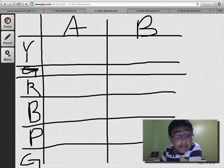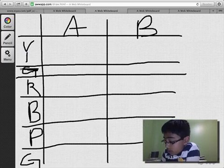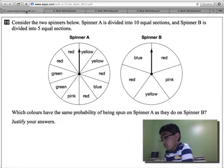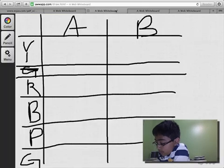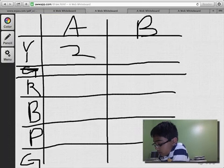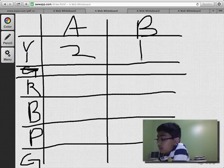Now for yellow, A to B. Let's go back to the question. There are two yellows in spinner A to one yellow in spinner B. So go back and we have a 2 to 1. That is a good ratio.